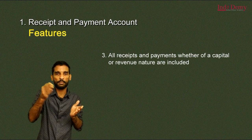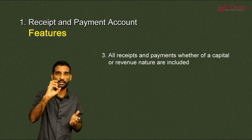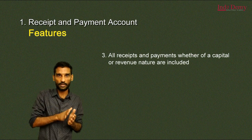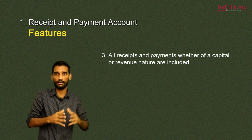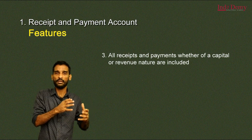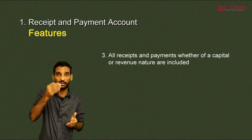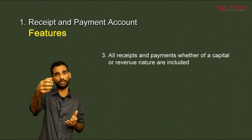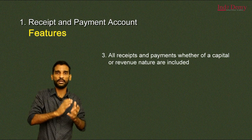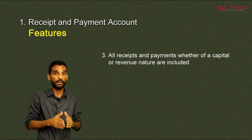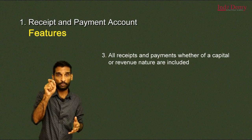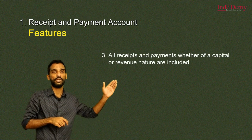Revenue payments are those with a benefit of less than one year — like salary paid, rent paid for one month, electricity bill paid, printing, and stationery. Revenue receipts are recurring receipts of the organization, like cloakroom rent received or hall rent received. Both revenue and capital receipts and payments must be recorded in this account.